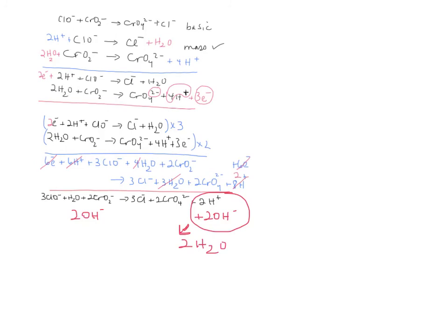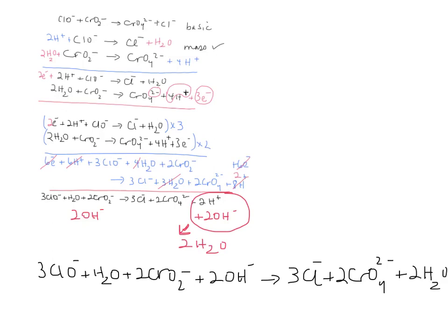And then write it again as 3ClO⁻, plus water, plus 2CrO₂⁻, plus 2 hydroxides, forms 3Cl⁻, plus 2CrO₄²⁻, plus 2 waters, and then you just cancel stuff in the end. So you've got one too many waters, two waters, and that's basically it.